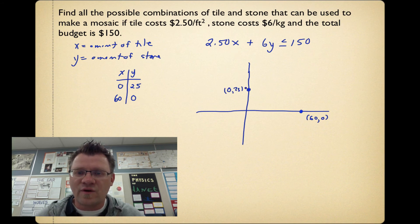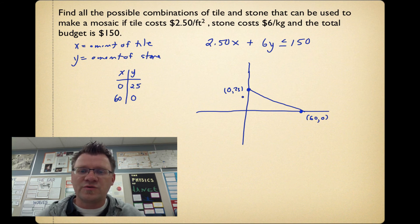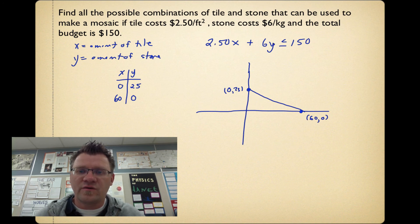So the line that we have runs straight through here from that point to that point. Now it's a solid line because it can equal 150. And now we're going to choose our test point to see which way we shade. We're going to plug in 0, 0. It isn't on the line, so we might as well plug that in. If I plug in a 0 here and a 0 there, I get 0 is less than or equal to 150, and that's true. It is less than 150.